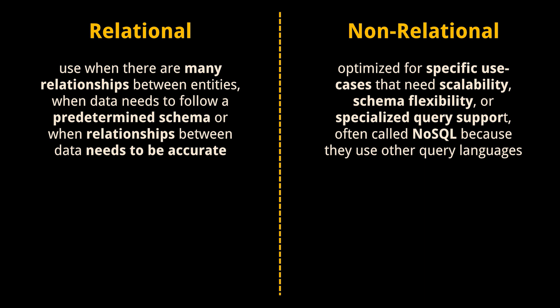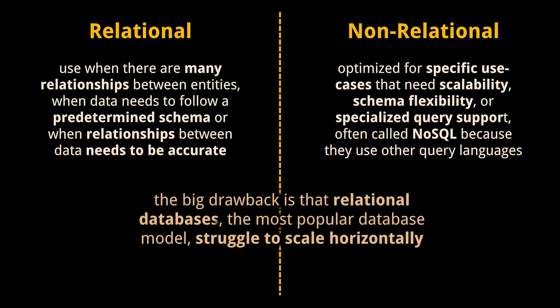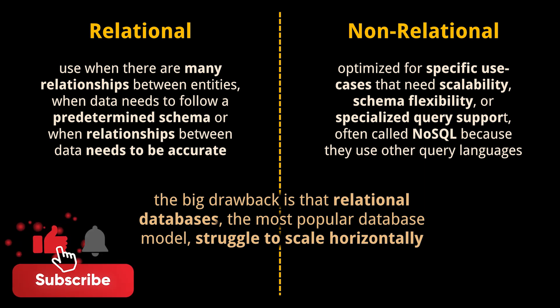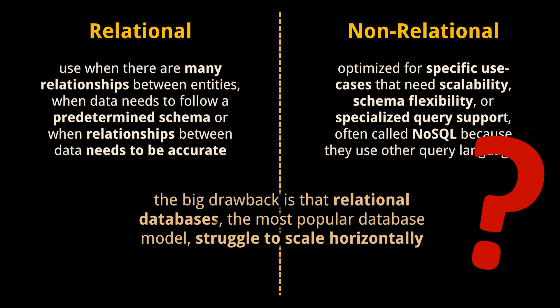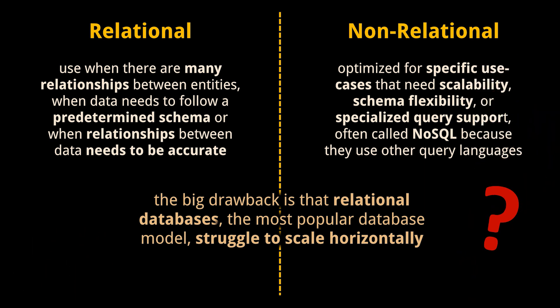Non-relational databases are optimized for specific use cases that need scalability, schema flexibility, or specialized query support. They are often called NoSQL databases because they can use other query languages. Vertical scaling is straightforward, but horizontal scaling requires higher overall compute and storage capacity. The big drawback is that relational databases — the most popular database model — struggle to scale horizontally.